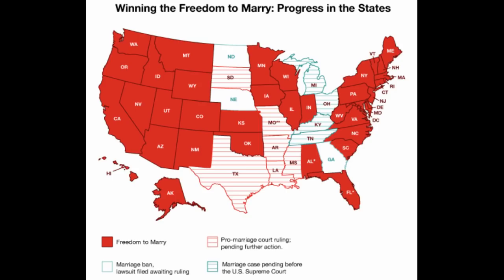This is mapping the freedom to marry and progress in each state. You can see the middle states and Georgia are giving resistance to anybody being able to marry anybody else.